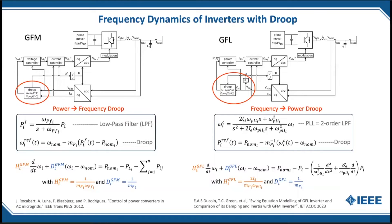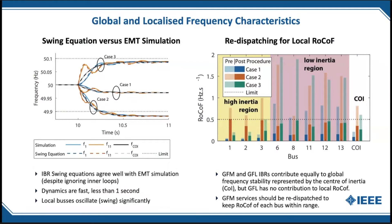We can combine these sets of resources and synchronous machines into overall swing equations. We tested this in the IEEE 14-bus system where synchronous machines have been replaced by grid-following and grid-forming inverters. On the left-hand side is a comparison between the swing equations and an EMT simulation for two loss-of-infeed events and one load rejection. The center of inertia — the weighted average of the frequencies — is shown as the black line: solid for simulation, dashed for the swing equation, and they correspond quite well.